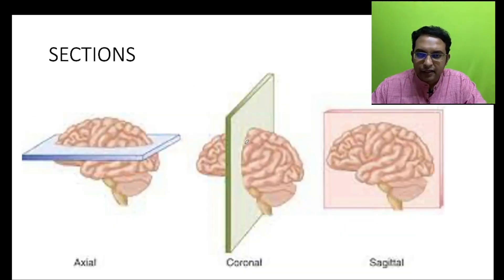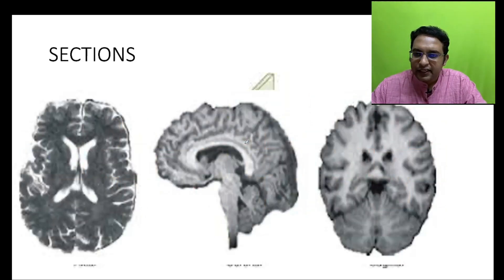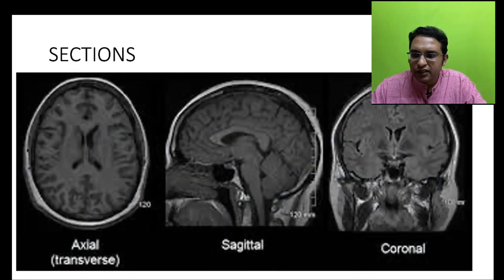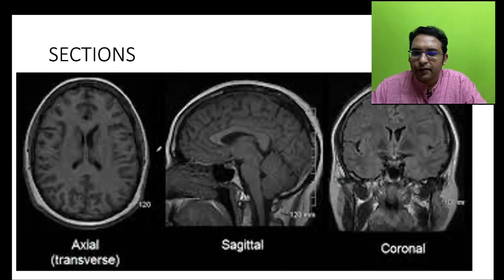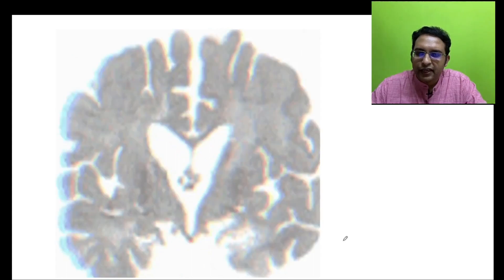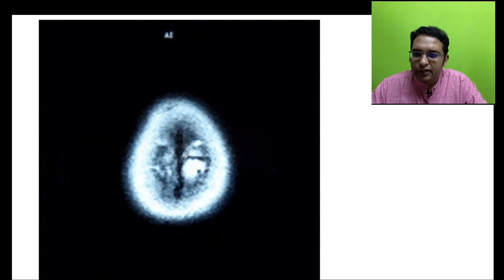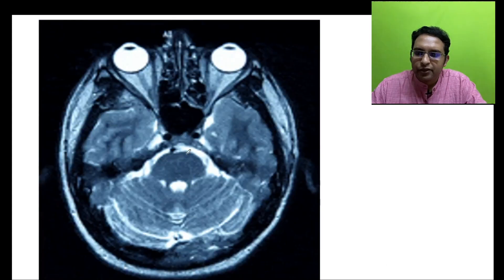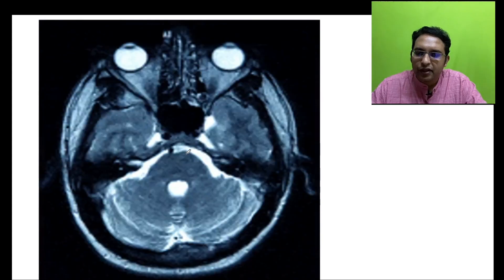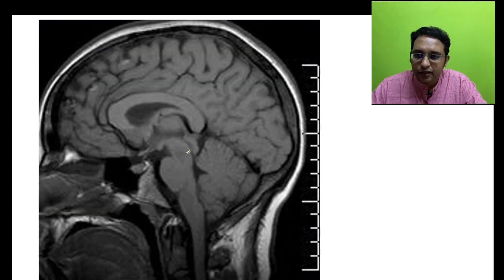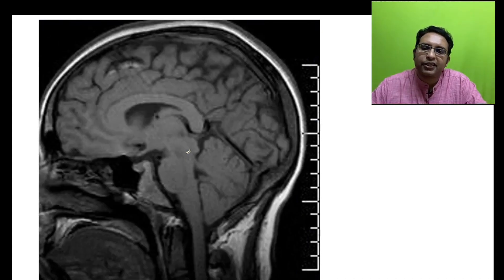Regarding MRI sections: cuts can be axial, coronal, or sagittal. An axial T2 image of the brain shows CSF bright and grey matter hyperintense; a coronal T2 section shows water bright with CSF dark depending on the sequence used; and a T1 sagittal section of the brain shows grey matter grey and white matter white.